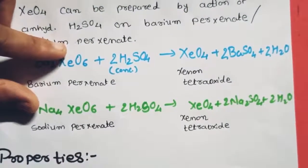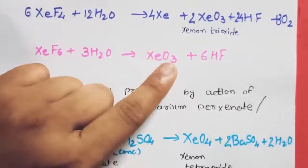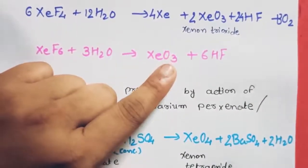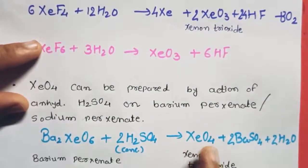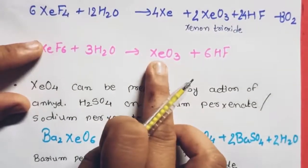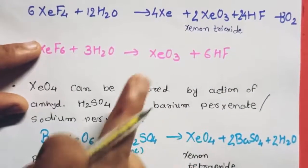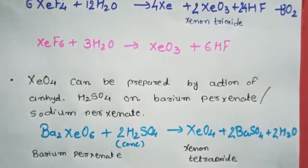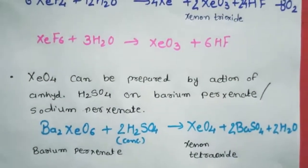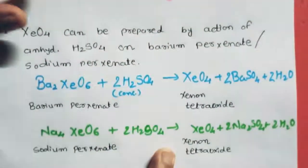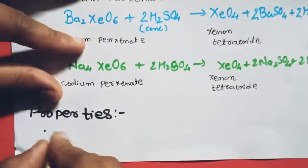Note: In some books you will see that xenon forms only one oxide, which is xenon trioxide, because xenon tetroxide is unstable. Xenon can form XeO₄ but it is unstable, while XeO₃ is stable. So xenon forms one stable oxide.